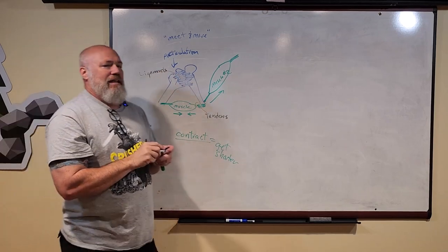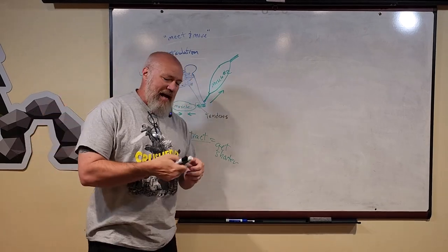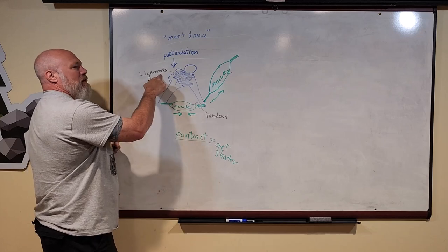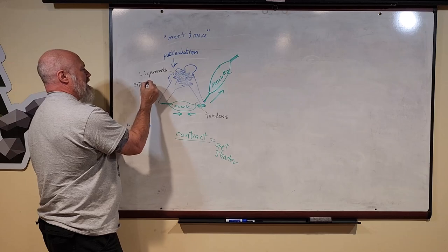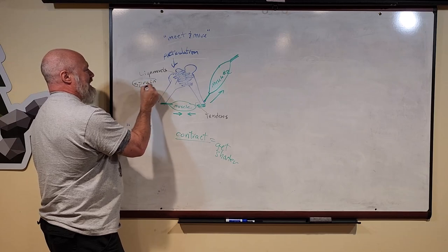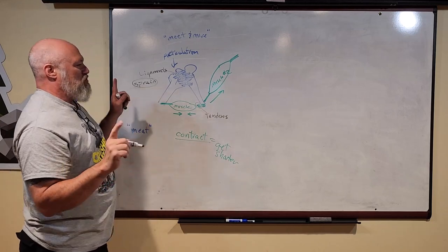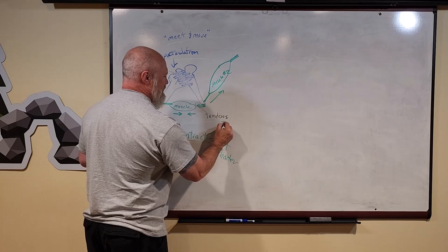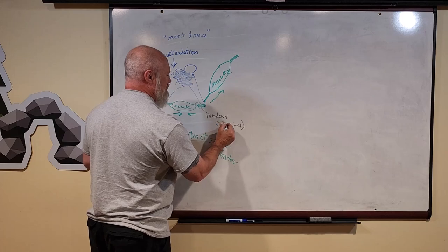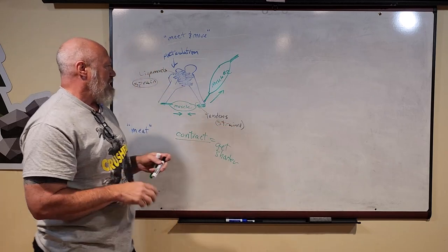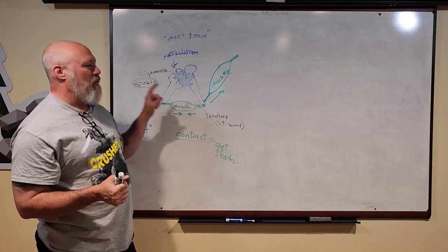You've heard of maybe somebody sprained an ankle or strained their back. When you injure a ligament, that's called a sprain with a P. I sprained my ankle means I hurt my ligaments. If I strained my back with a T, that means I hurt some of my tendons or muscles in my back, but not my ligaments. That's just a little thing to help you know the difference between a strain—muscle or tendon—or a sprain—ligament.